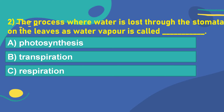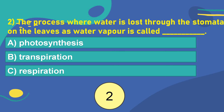Think of the answer. Your time starts now. 5, 4, 3, 2, 1, 0. OK. The correct answer is Option B: Transpiration.